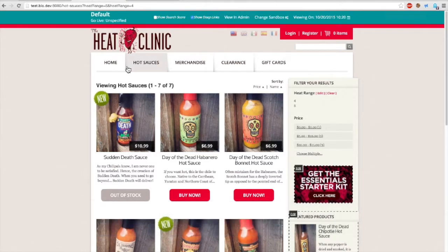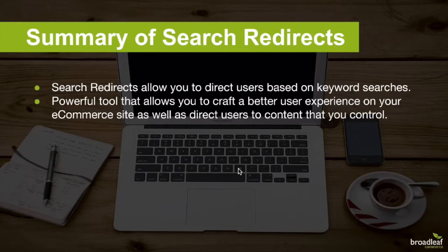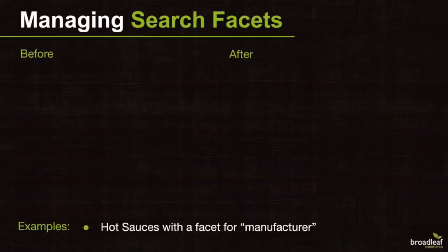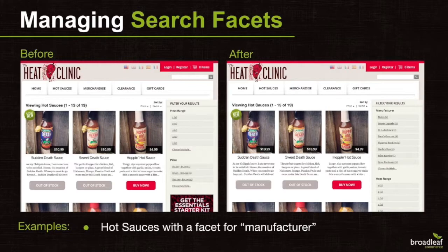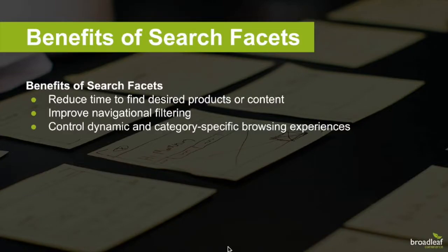As you can imagine, you can set up a search redirect for pretty much any page — a product detail page, a category, or something more complex involving faceting. This is a very powerful tool that lets you craft a better user experience on your e-commerce site. Now we're going to move on and talk about search facets. Earlier we demonstrated how a user can use search facets to filter search results like price and heat range. Using Broadleaf, you can control these all within the Broadleaf admin.